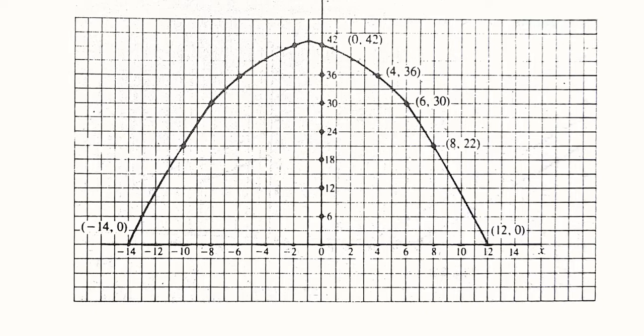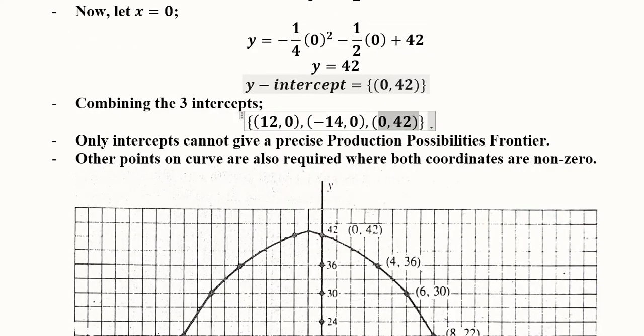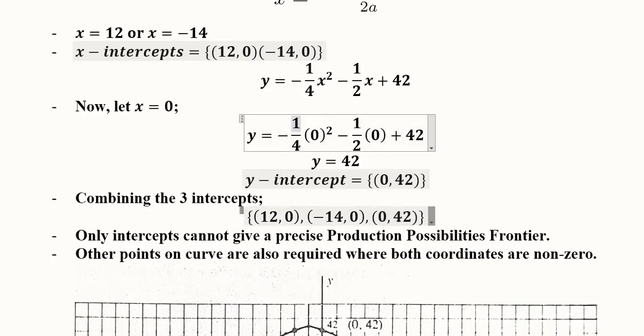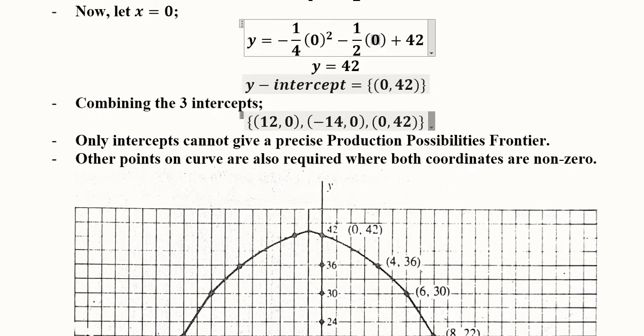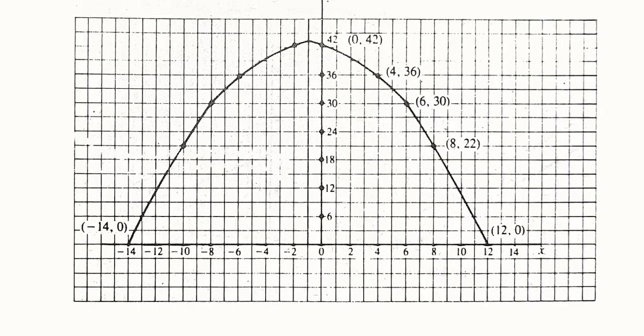We know that production possibilities frontier has a shape which is bent outwards or concave to the origin. We will not just use these three values; we will consider this function and try to find further values of x and y by putting different values of x. For instance, for this point I will put 4. When I put 4, the value of y will be 36, giving us (4, 36).